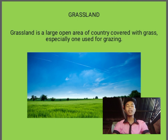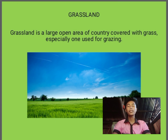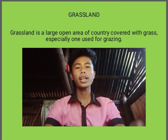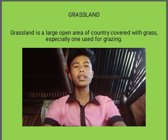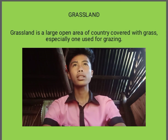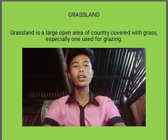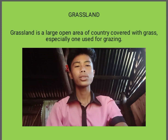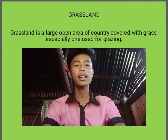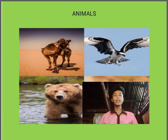Next is grasslands. In our country, we can find many grasslands. We can find animals like cows living there. A grassland is a very large open area covered with grass, especially one used for grazing. For example, when walking from home to school in high school, after going home we would find that our slacks had many amorsiko — the plant that sticks to clothing — showing that grasslands have many plants.